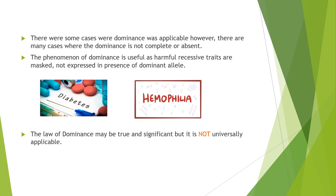There were some cases where dominance was applicable. However, there are many cases where dominance is not complete or is absent. The phenomenon of dominance is useful as harmful recessive traits are masked and are not expressed in the presence of a dominant allele. For example, in humans, diabetes and hemophilia are recessive characters and thus are not expressed in the presence of the normal dominant allele. The law of dominance may be true and significant, but it is not universally applicable.